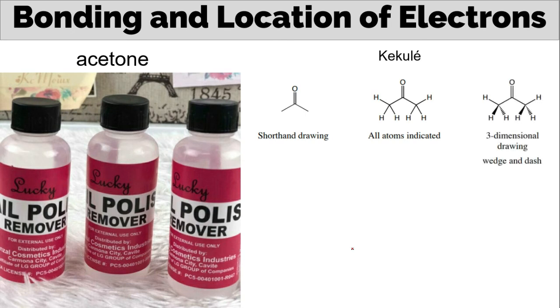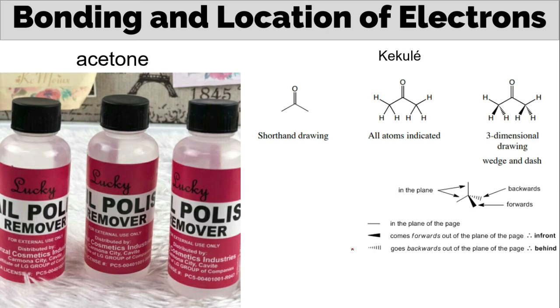Next, we have the wedge dash or wedge hash. So these are diagrams that are most common representations used to show a 3D shape. They are usually drawn with two bonds in the plane of the page, one in front of the plane and one behind the plane. So when it's bold, it's in front. When it's broken lines, it's behind.